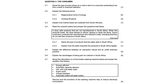Let's take a good look at this question. So 2.1, name the type of scam where an email is sent to a customer pretending to be from a bank or financial institution. Possible answers here: phishing or online scam. But phishing is the most correct answer.